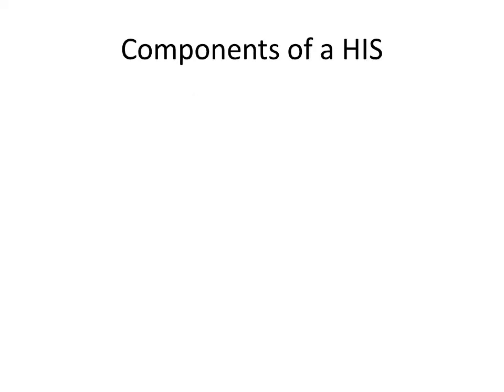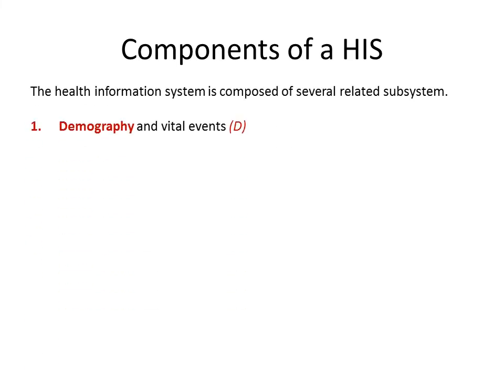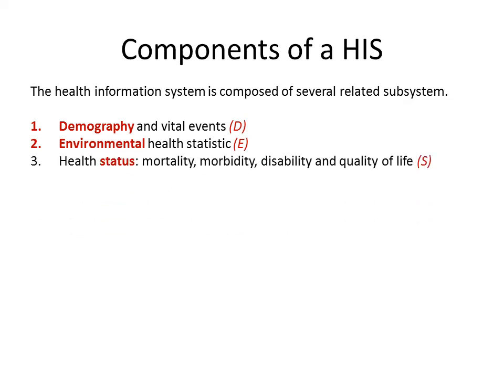What are the components of health information system? While unnecessary details should not be noted, the bare necessary details are the components. These should include: demographic and vital events; environmental health statistics; health status — that is, mortality rates, morbidity rates, age-specific and sex-specific morbidity and mortality rates, cause-specific mortality rates, disability rates, etc.; and health resources — number of health facilities such as sub-centers, population served by one sub-center, number of beds per thousand population, doctor-to-population ratio, nurse-to-population ratio, etc.